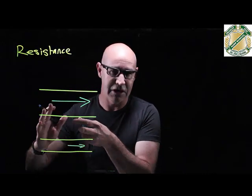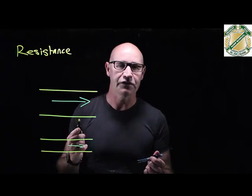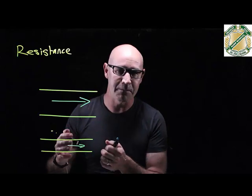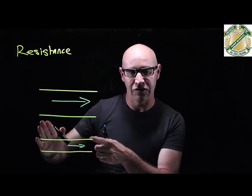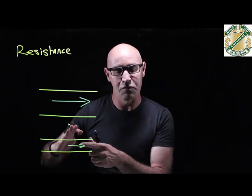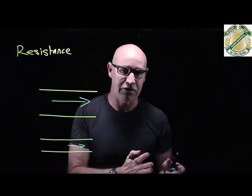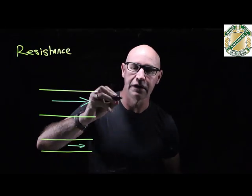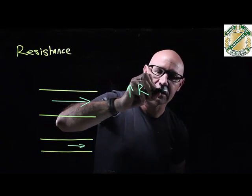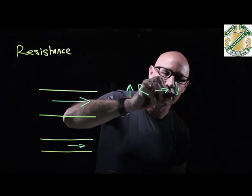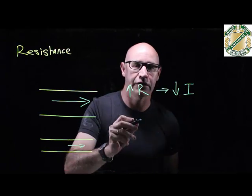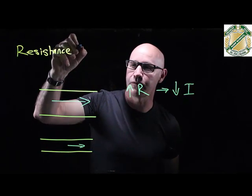It's a smaller area for the current to flow through. It's exactly the same with electricity as well — some materials allow electricity to flow very easily, and others resist the flow of electricity. So quite simply, if we increase the resistance, we decrease the current. Remember, I is the symbol for current, and R is the symbol for resistance.